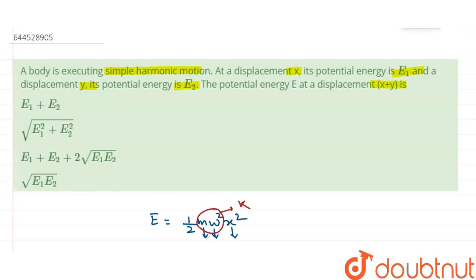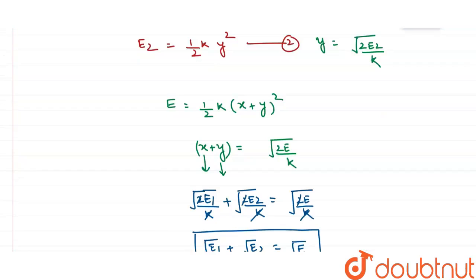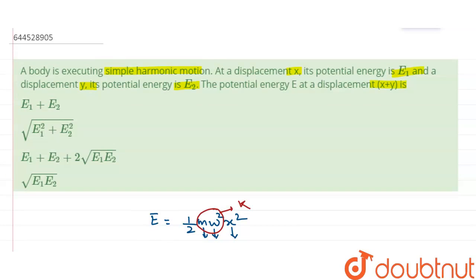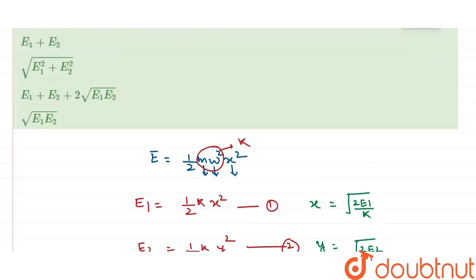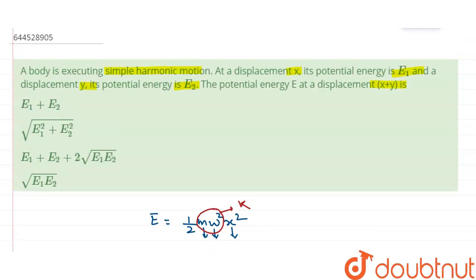So let's check the options. The correct answer is √E1 + √E2 = √E. Thank you.